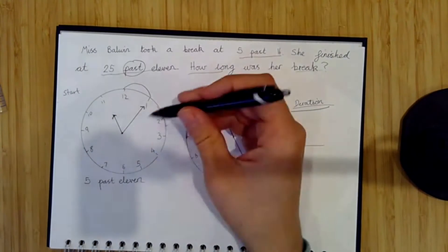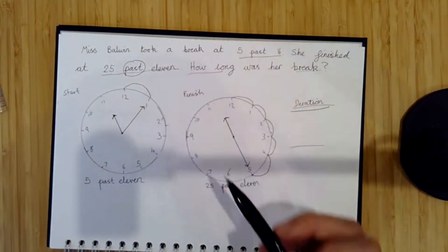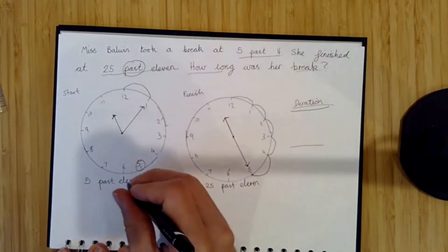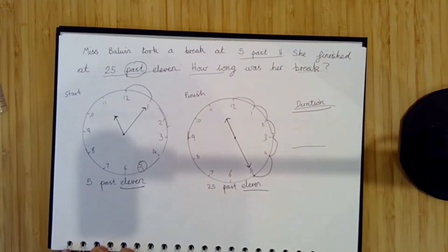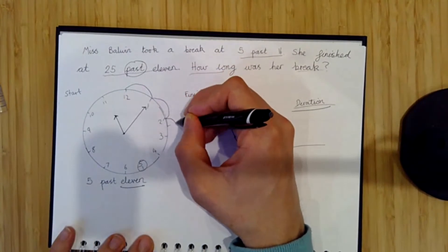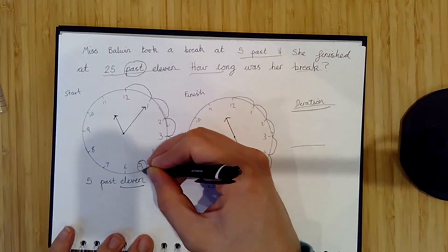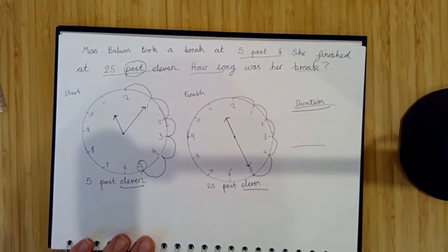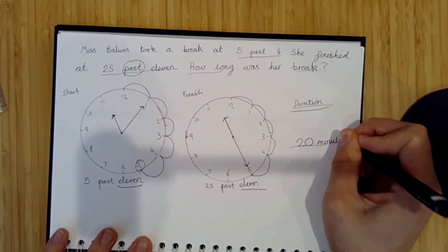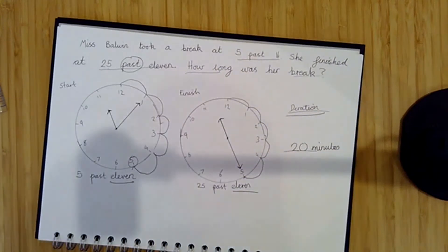To calculate the duration, I count in fives from the start to the finish. Both times are past eleven, so I'm only counting minutes. Counting up in fives: five, ten, fifteen, twenty — there was twenty minutes difference from the start time to the finish time. That means Miss Baldwin's break was twenty minutes. I've calculated the duration of the break.